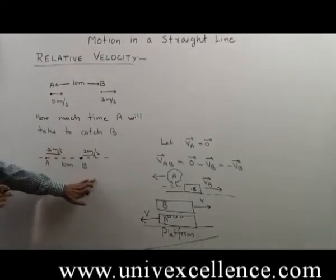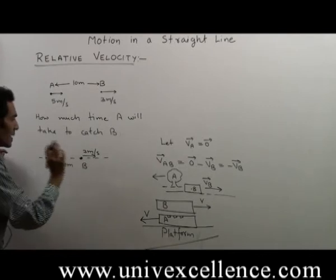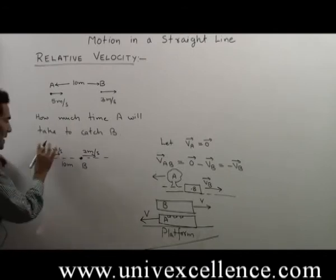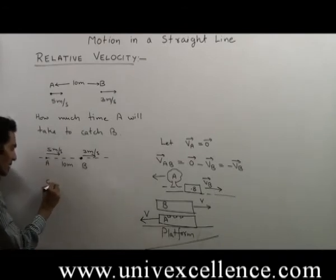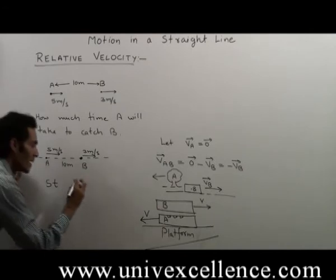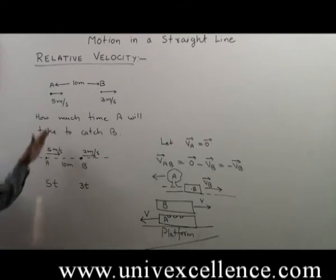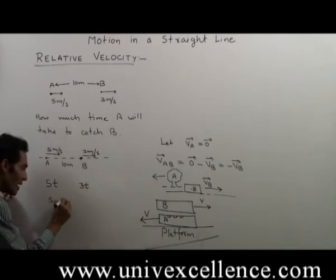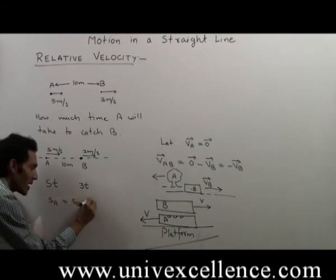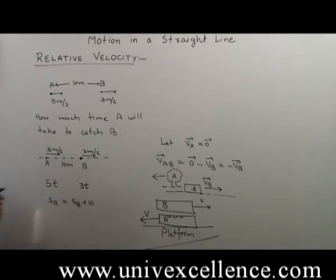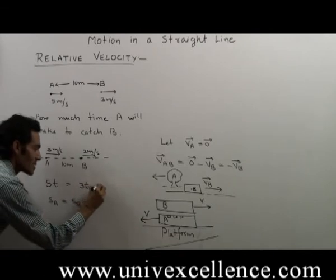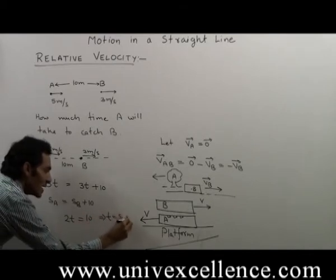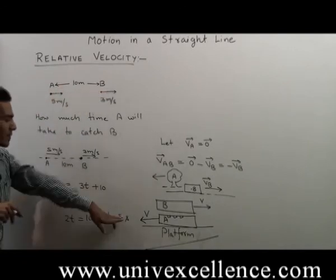Let's solve this problem using equations of motion. Let object A catch object B after time T. In time T, object A will cover a distance of 5T, and in the same time, object B will cover a distance of 3T. To catch object B, the distance covered by object A should equal the distance covered by object B plus the initial separation of 10 meters. So 5T equals 3T plus 10, giving 2T equals 10, which implies T equals 5 seconds. So A will catch B after 5 seconds.